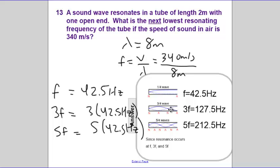The next resonating frequency, the next highest musical note that you could play would be three times the fundamental frequency, 127.5 hertz, and then 5F, 212 hertz. The next one would be 7F, 9F, and so on. Whole odd number values of the fundamental frequency.